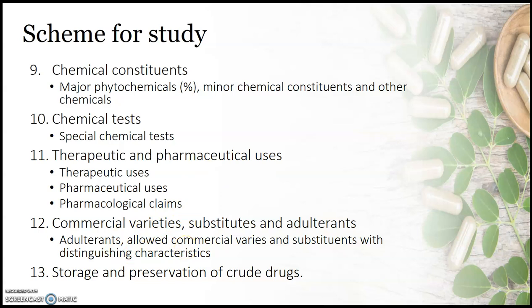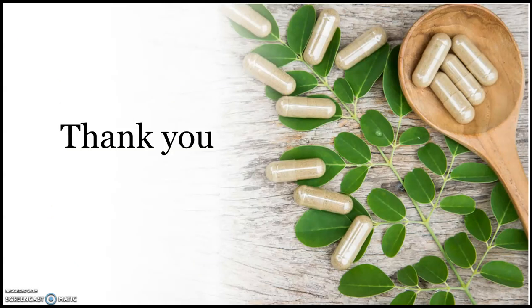In the case of adulterants, the biological source and distinguishing identification features are studied. In the last point, that is storage and preservation of crude drugs, we know that there are some crude drugs which need special storage conditions and packaging conditions to protect from deterioration. So for such kinds of plants, their storage and preservation has to be studied in the scheme of pharmacognostic study.